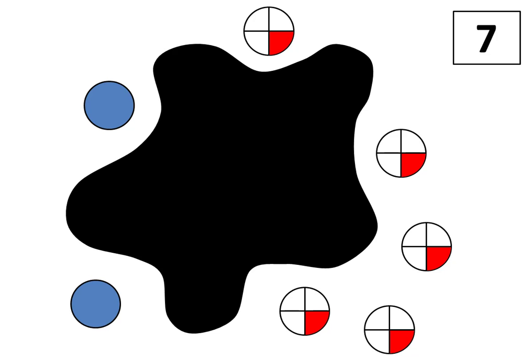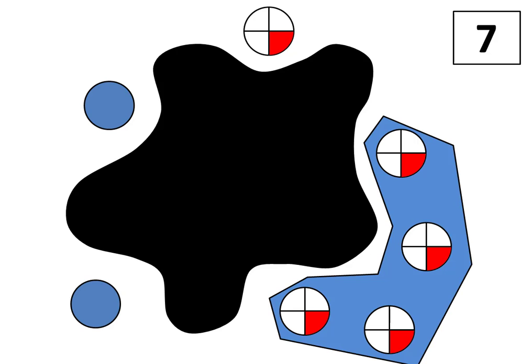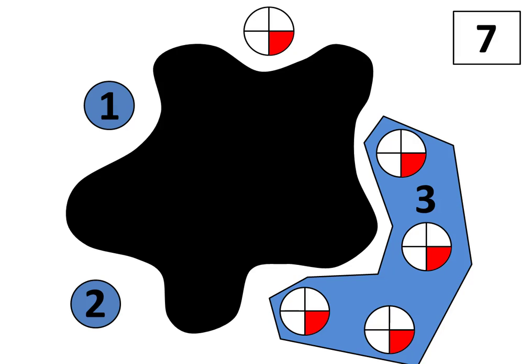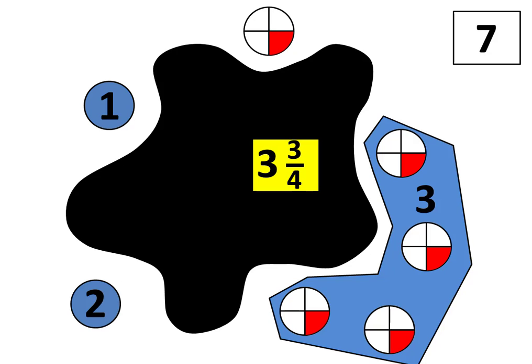Solution number four uses a combination of addition and subtraction with a focus on whole numbers. It helps to think of four-fourths as one whole. I can see three wholes outside the splat, but there is also one-fourth. I can make this easier by moving the one-fourth inside the splat. Now I know the total in the splat is four, because three plus four equals seven. The total inside the splat is four, but I still need to bring the one-fourth back out — that's like subtracting one-fourth from four — giving three and three-fourths.